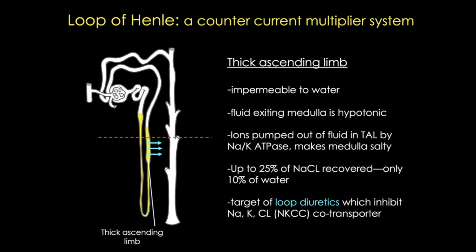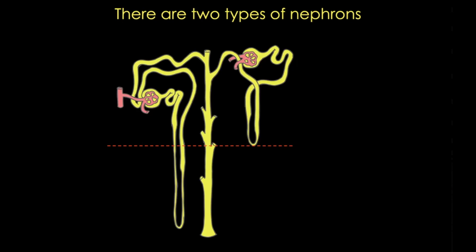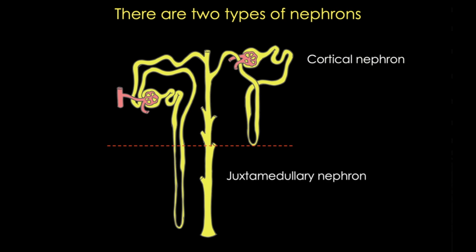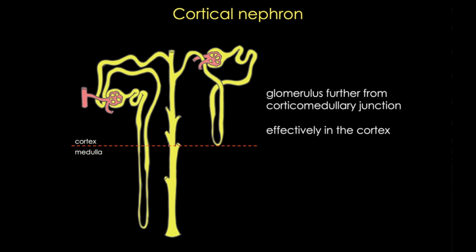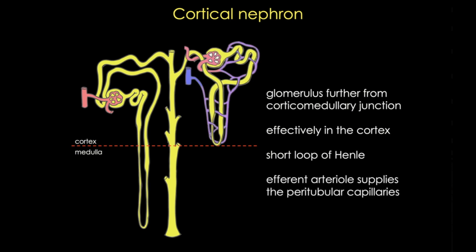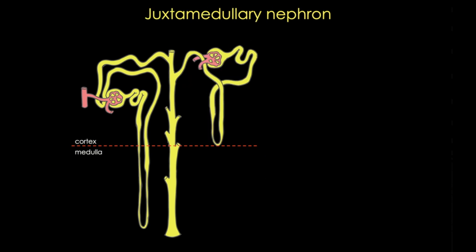I want to step aside to talk about the blood supply in the nephron, because it affects kidney physiology. There are two subsets of nephrons in the kidney: cortical nephrons and juxtamedullary nephrons. Cortical nephrons reside fully in the cortex, and the glomeruli are further from the corticomedullary junction. These nephrons have a very short loop of Henle, and importantly, the efferent arteriole supplies capillaries called the peritubular capillaries.